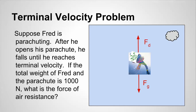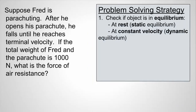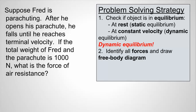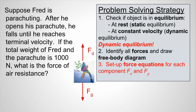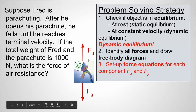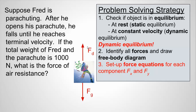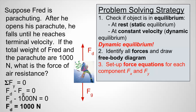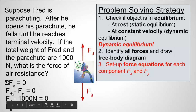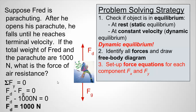Suppose Fred is parachuting. After he opens his parachute, he falls until he reaches terminal velocity. If the total weight of Fred and the parachute is 1000 Newtons, what is the force of air resistance? First, we check if the object is in equilibrium: is it at rest? No. Is it at a constant velocity? Yes — it's dynamic equilibrium because he's at terminal velocity. We identify all forces and draw a free body diagram: force of gravity pulling him down and force of drag pulling him up. Summing forces in the y direction and setting equal to zero: force of drag minus force of gravity equals zero. Since force of gravity is 1000 Newtons, the drag force equals 1000 Newtons.